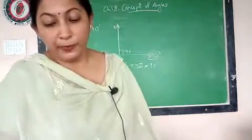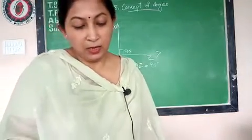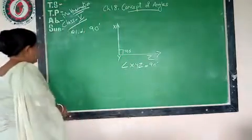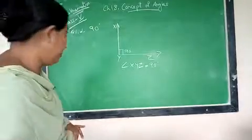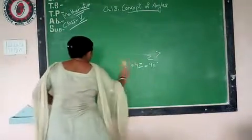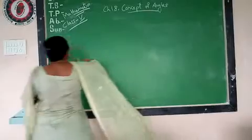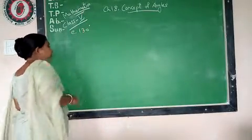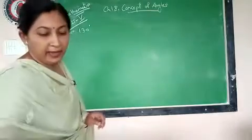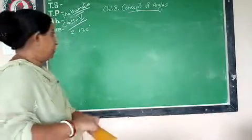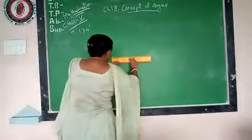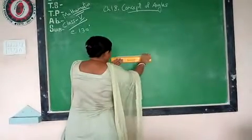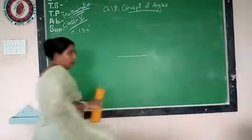Similarly, if I am drawing an obtuse angle, suppose 130, that is question number E. Question number E is given 130. Same way, first you will draw the base of the angle with the help of the scale. Take the scale and draw a straight line.